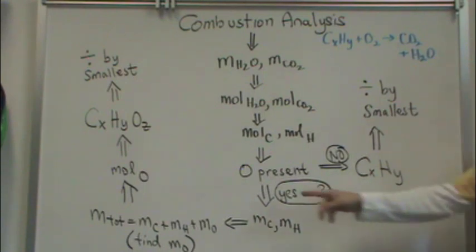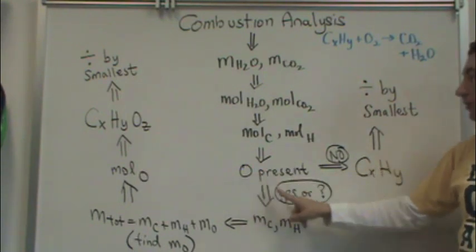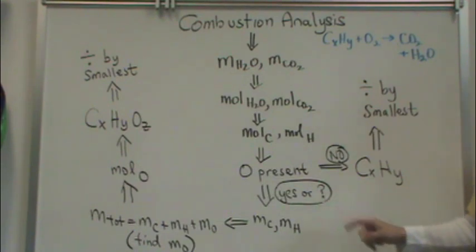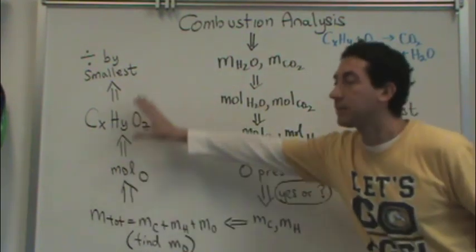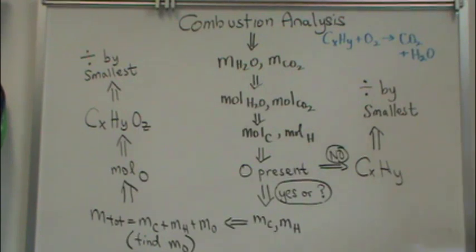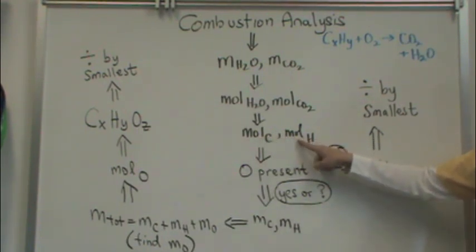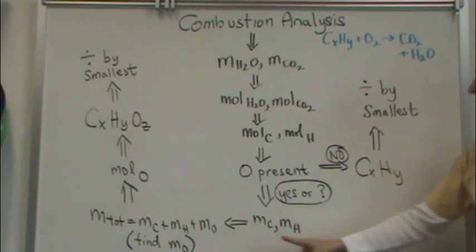But what if either you know oxygen is present, or maybe you're unsure? If oxygen is present, or even if you're not sure it's present but it could be present, you have to go through this part of the flowchart. How does that work? You're going to take the moles of carbon and hydrogen, use their atomic masses from the periodic table, and find the mass of carbon and the mass of hydrogen.